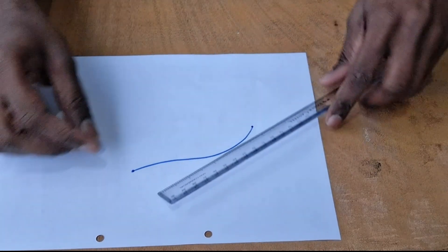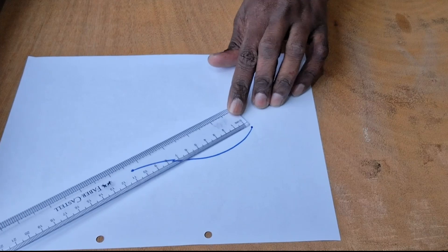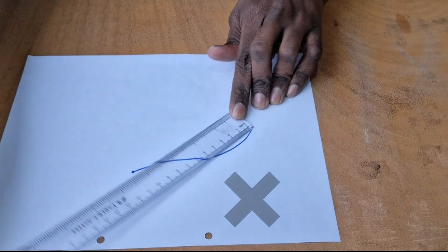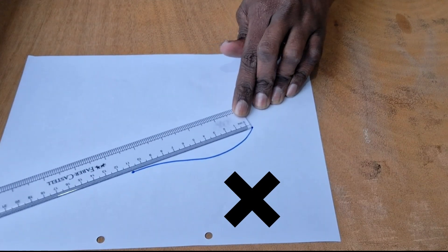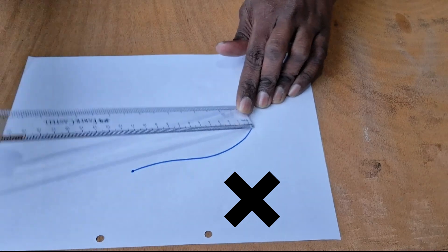In this video, we are trying to measure the length of a curved line. Now, using a ruler like this just doesn't work, right? What can we do?